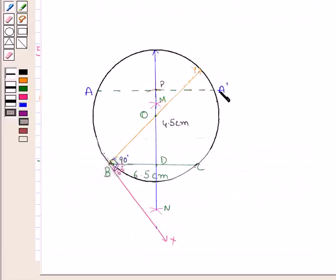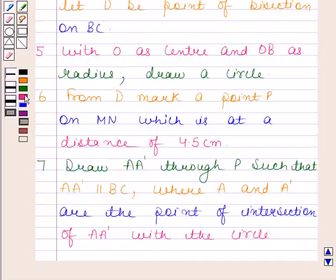This is the line AA' which is parallel to BC.